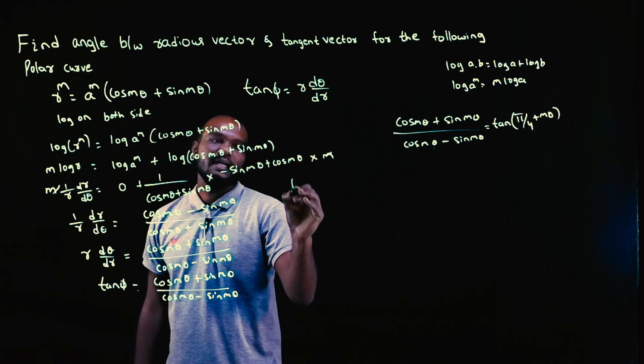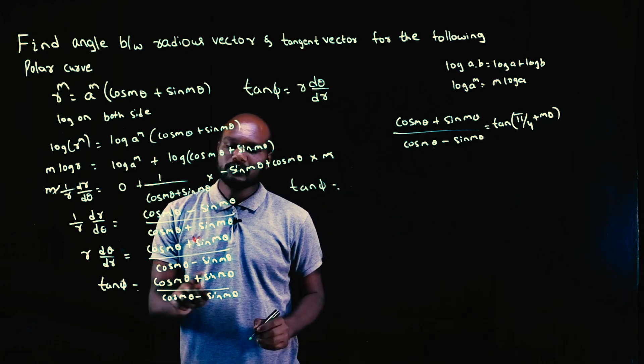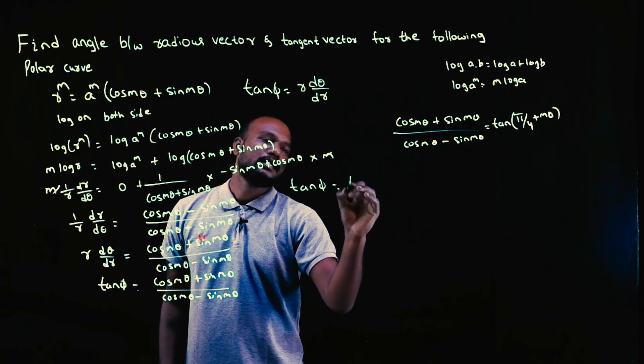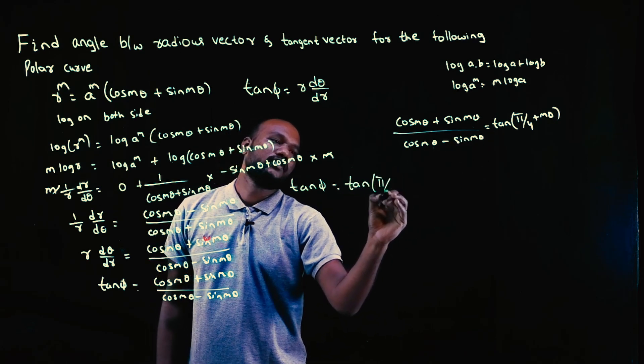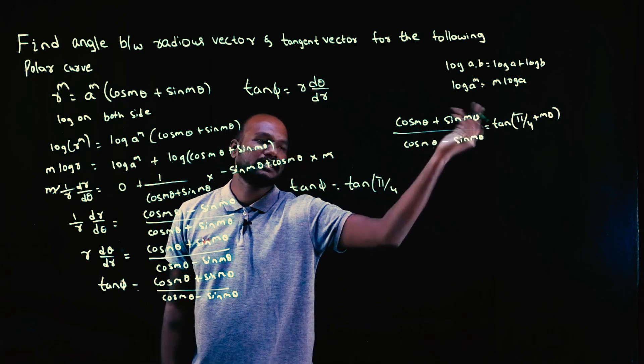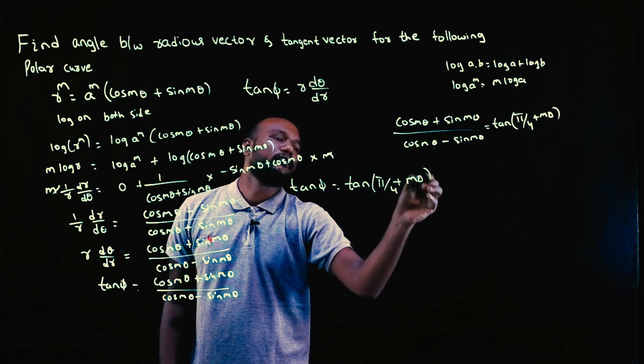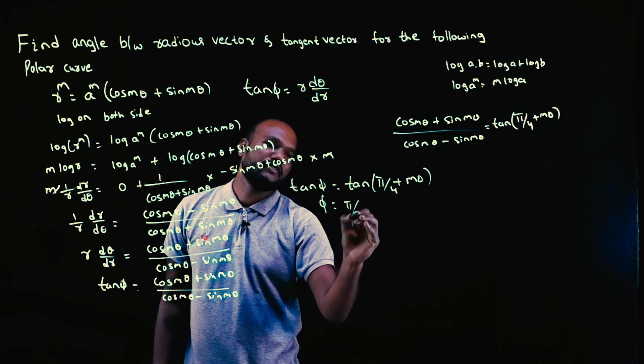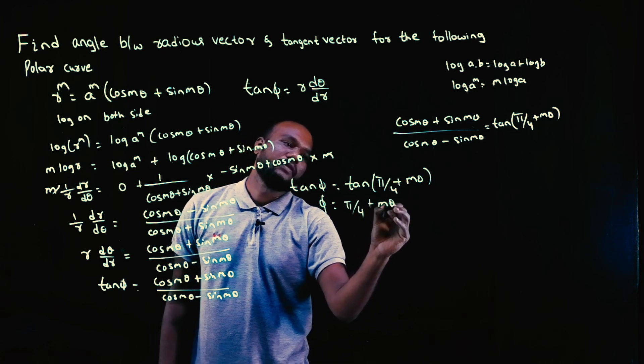So tan phi equals tan(pi/4 + m theta). When tan appears on both sides, you can cancel them. Then you'll get the phi value as pi/4 plus m theta.